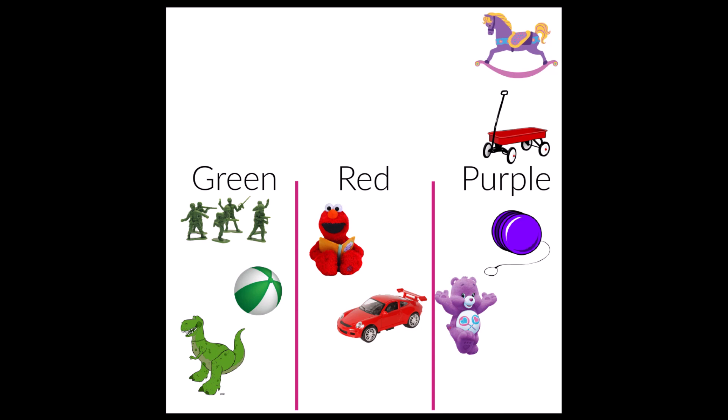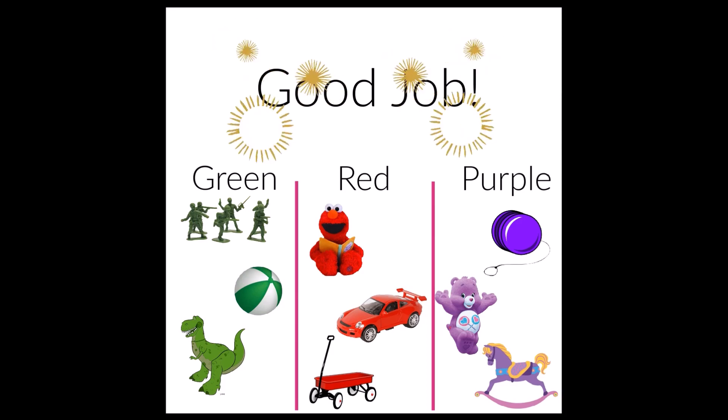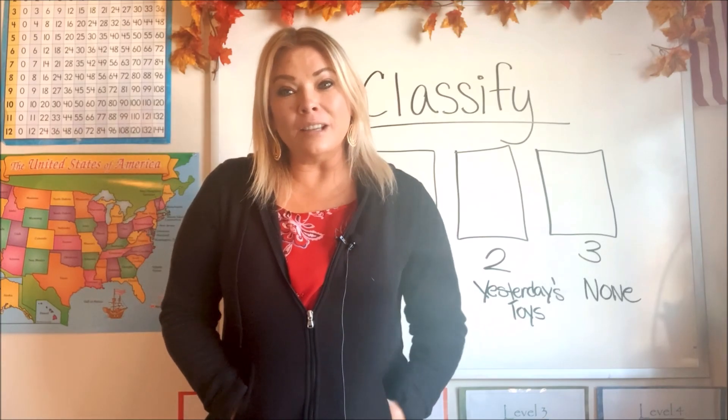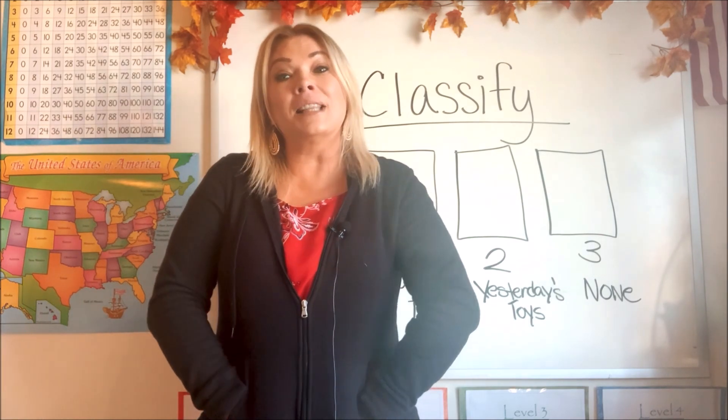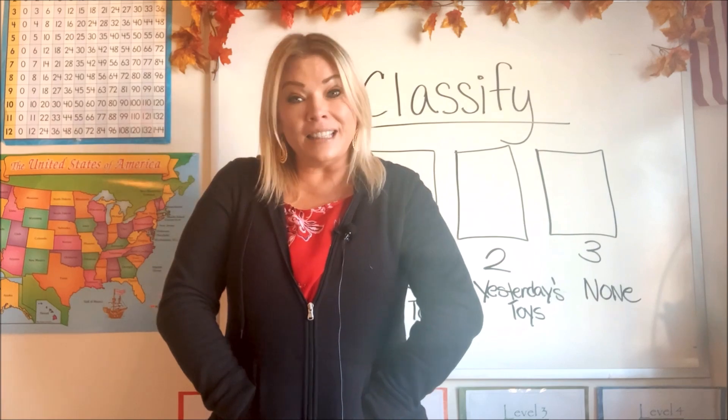All right. Next, let's put the purple horse in the purple category. And our last item is the wagon. What color is the wagon? You got it. It's red. Good job. Good job. Now we have classified all of our toys by color. You guys are doing so good. Good job, you guys. I'm so proud of you. Let's try one more group of items and let's classify them into different groups.